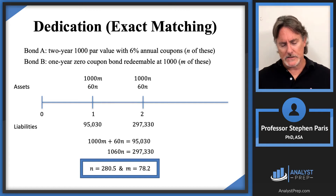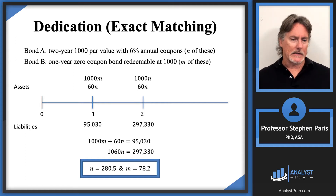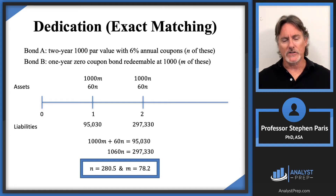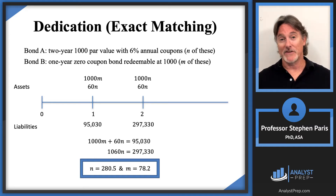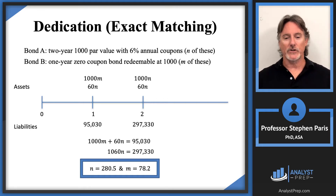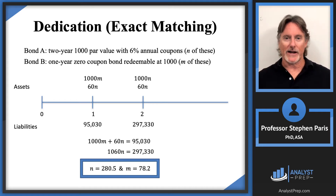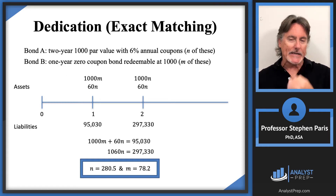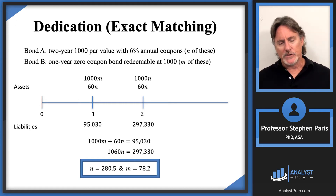Now, practically speaking, you can't go out and buy 78.2 bonds — you can buy 78 or 79, but not 78.2. However, we're not going to let that stop us from stating the theoretical answer. We're looking at this more theoretically than practically. The same applies to the 280.5 Bond A's.